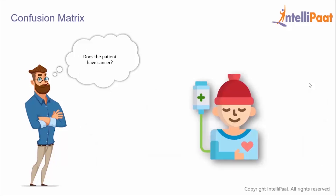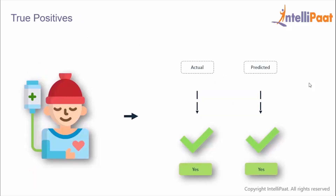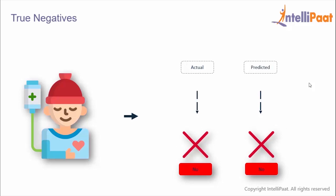Let's understand all of those terms through an example. Let's say there's a dataset of all the patients in a hospital and we build a logistic regression model on top of it to predict if a patient has cancer or not. There could be four possibilities. Starting with true positives: these are the cases in which the actual value is true and the predicted value is also true — the patient has cancer and the model also predicted cancer.